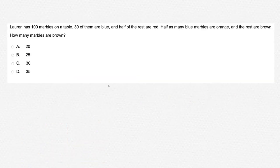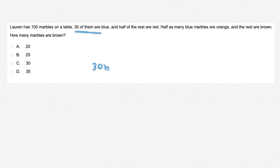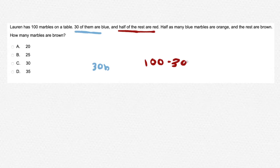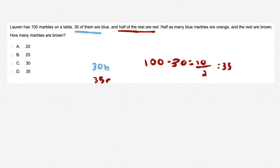Now let's try another question. Lauren has a hundred marbles on a table. Thirty of them are blue and half of the rest are red. Half as many blue marbles are orange and the rest are brown. How many marbles are brown? We know there are thirty blue marbles. Half of the rest means 100 minus 30, which gives you 70. Since it said half of the rest, we divide by 2, giving us 35. That means there are 35 red balls.